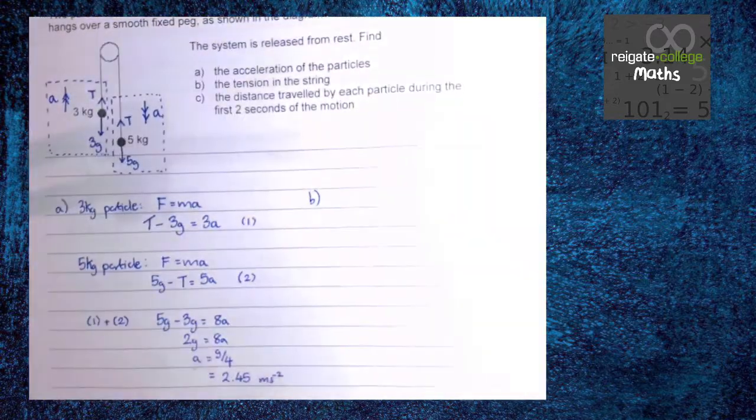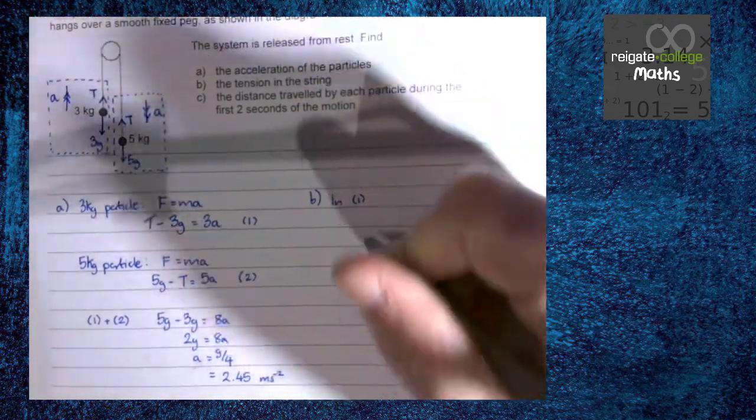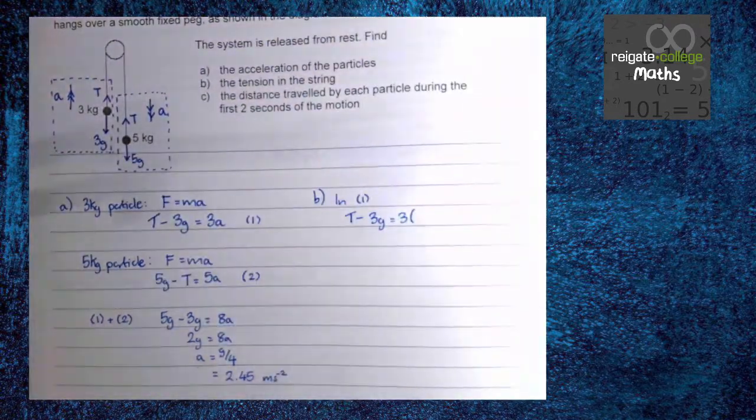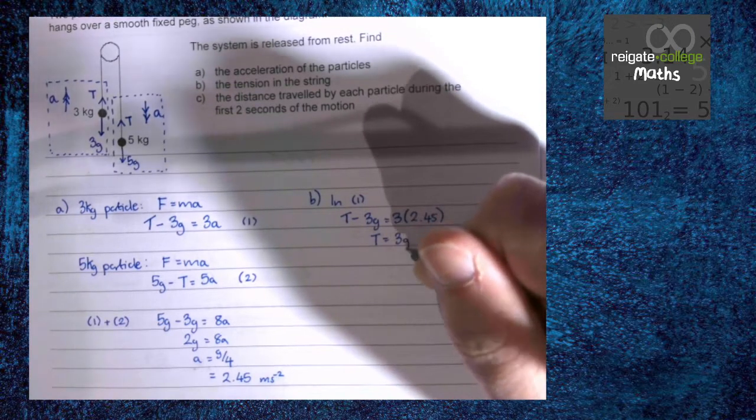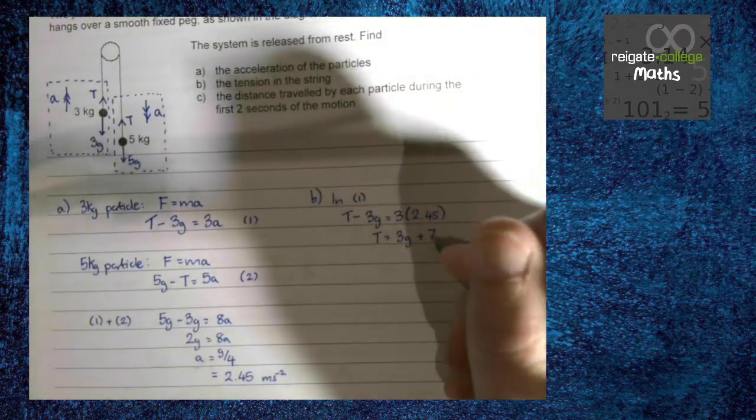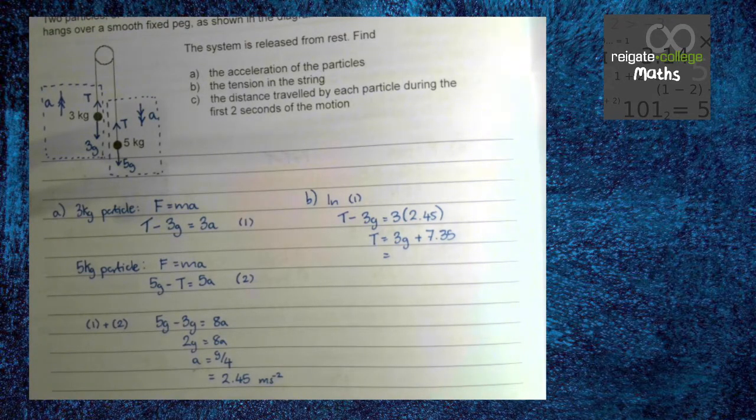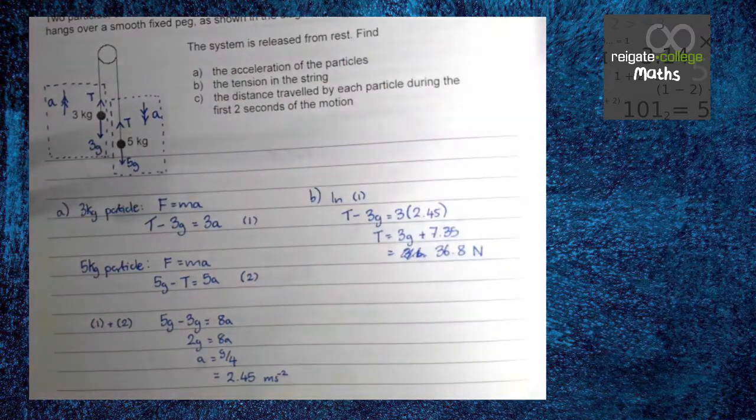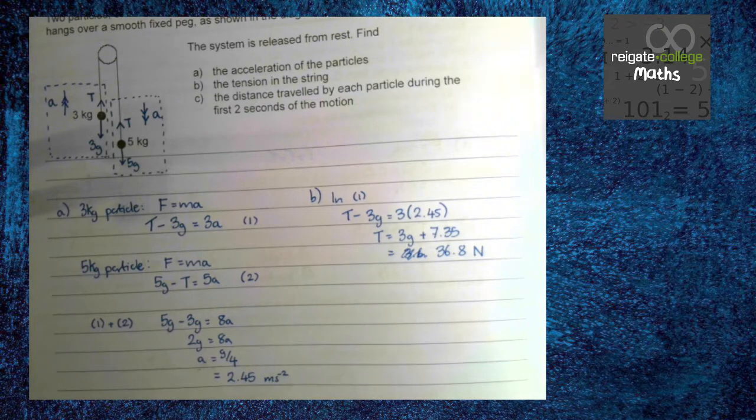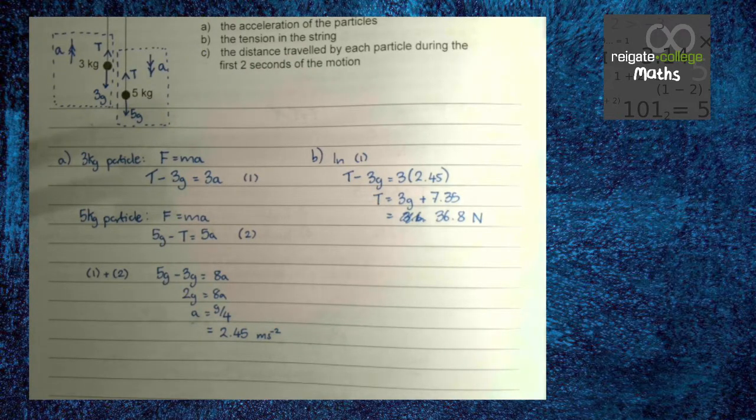So part b, we are now finding the tension, which is the case of putting this back into one of our equations. So I'm just going to use equation 1. So we know that t minus 3g is going to be 3 times this 2.45. So t is going to be 3 times g plus 3 times 2.45, which is 7.35. Then we just stick it in the calculator and work it out. So 3 times 9.8 plus our answer 36.75 newtons. So with parts A and B, we've dealt with the F equals MA stuff. Now let's look at part C.